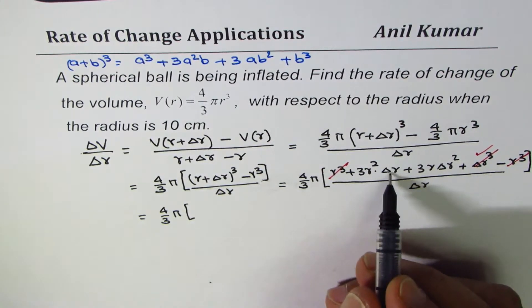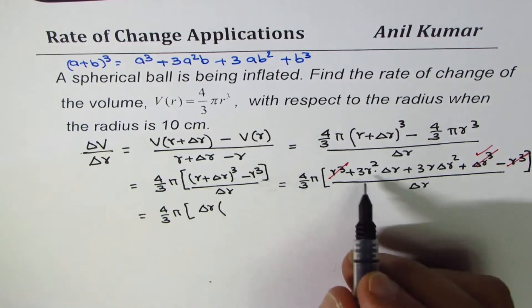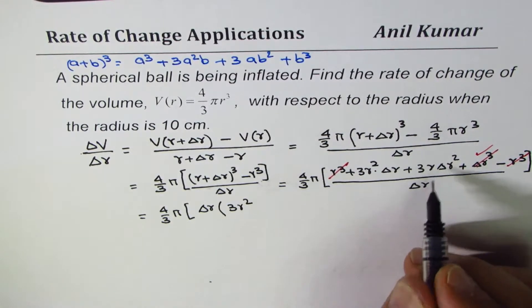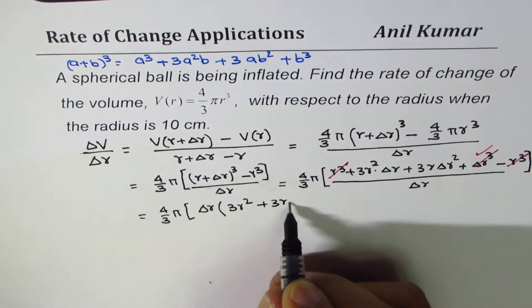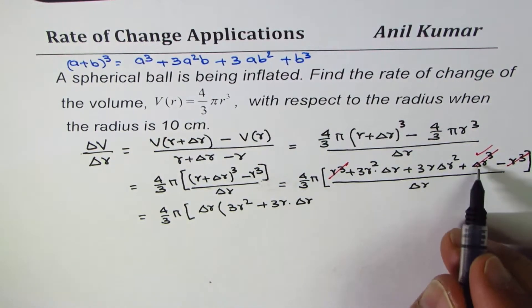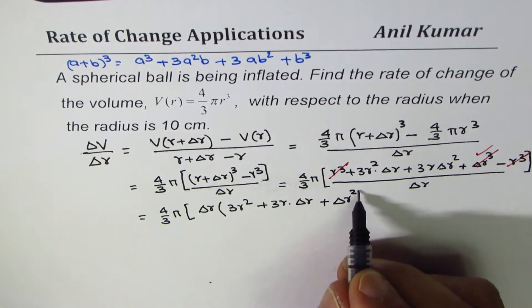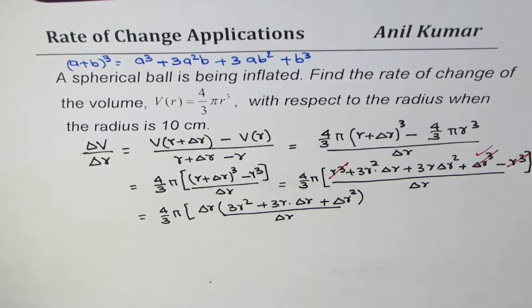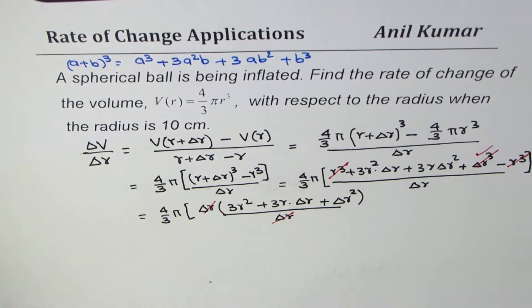Now amongst the terms left, ΔR can be taken common. So we get ΔR within brackets, we are left with 3R² plus 3RΔR plus ΔR² divided by ΔR. Now you can cancel these two, change in radius.